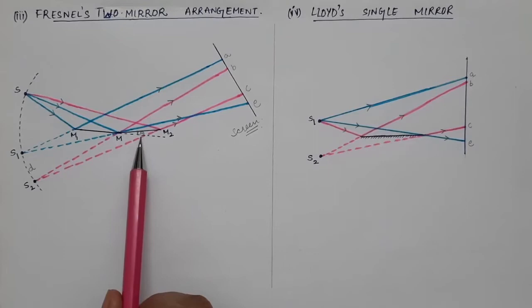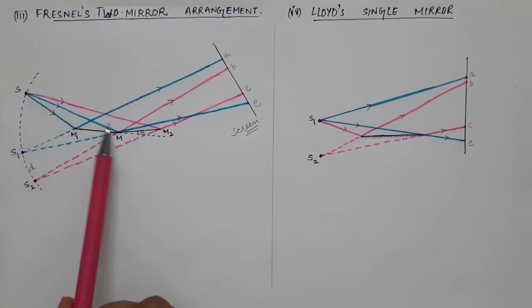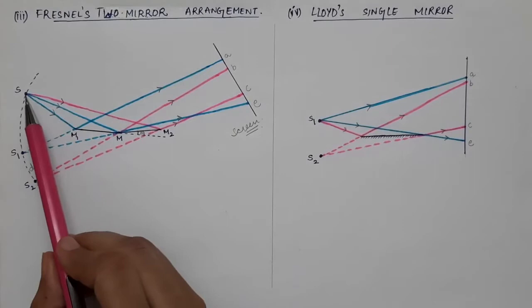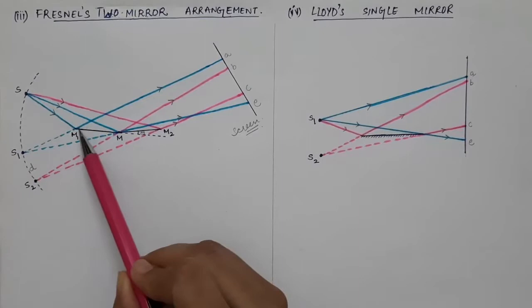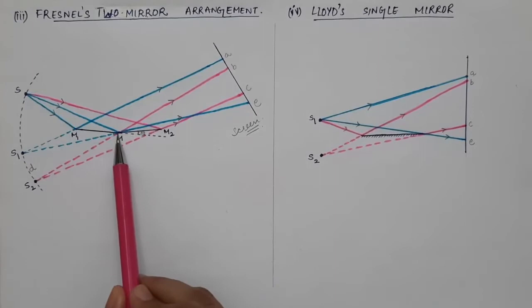This is the extended axis of the first mirror, and the second mirror makes an angle of theta with the first mirror. Now the light from the source S is made to fall upon the surface of the plane mirrors. The light falls simultaneously on the two mirrors and gets reflected in this direction, and here we have a screen. When the light from source S falls on the surface of the first mirror it gets reflected, and this first ray reaches point A on the screen.